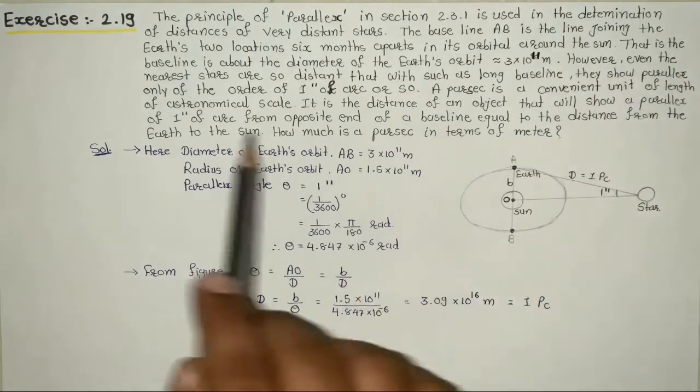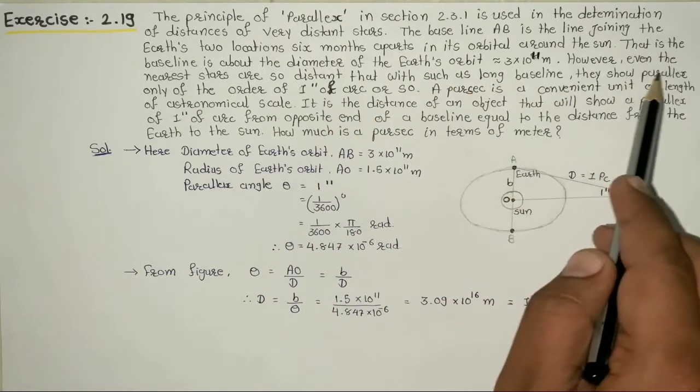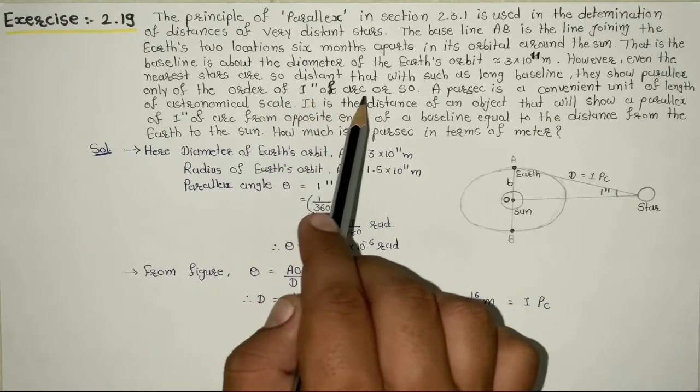However, even the nearest stars are so distant that with such a long baseline, they show parallax only of the order of one second of arc or so.